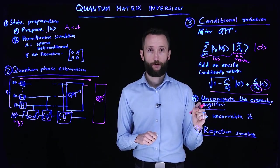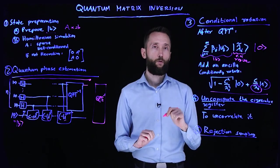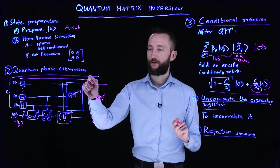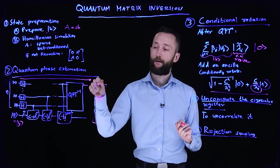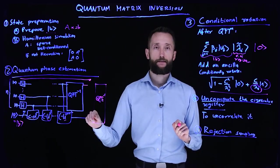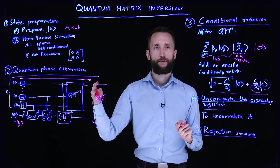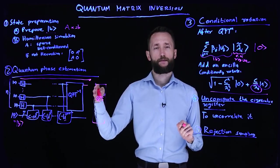But before we can start pulling out this probability amplitude and estimating it, we have to uncompute everything we've done on all the registers except the ancilla. The reason we have to do this is because if we just start rejection sampling here, then all of these qubits are still entangled. So it would end up here with some strange mixed state if you just trace out a part of the system.